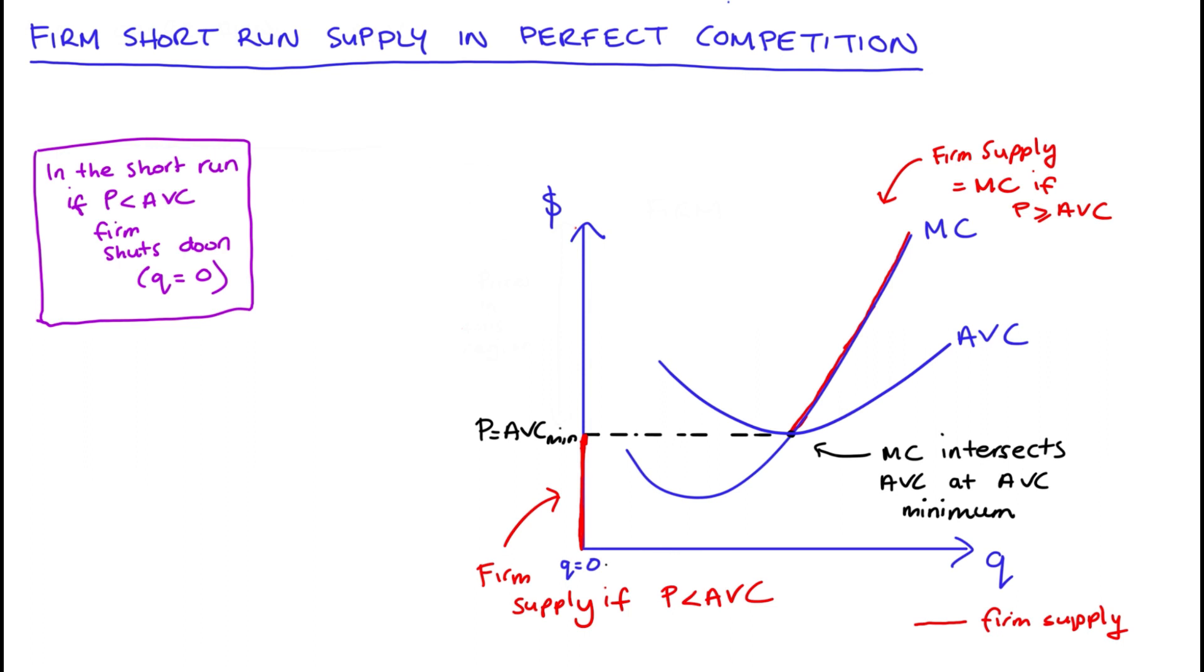but it will be the lowest point that the price could possibly be. If the price was any lower, then our average variable costs would be higher than it. So sometimes we describe the short run supply curve for the firm as being equal to marginal cost only if it's greater than or equal to a minimum of average variable costs, and that's why.